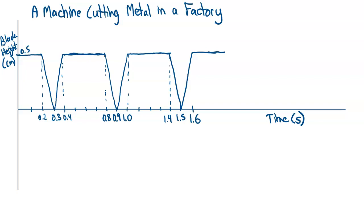The last example is a machine cutting metal in a factory. Imagine a large roll of metal being unrolled at a constant speed and chopped into equal lengths — perhaps for car door panels. The blade height is 0.5 centimeters above the surface, and every so often the blade goes down and chops the metal into equal-length pieces.